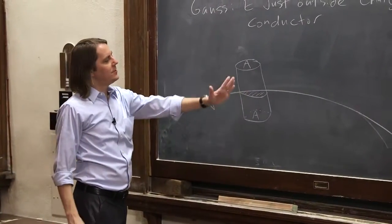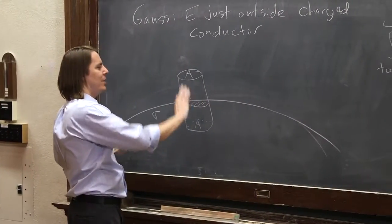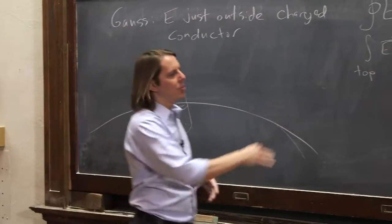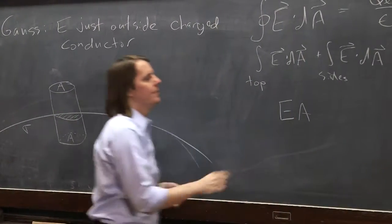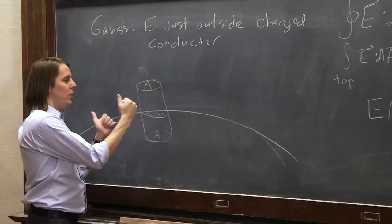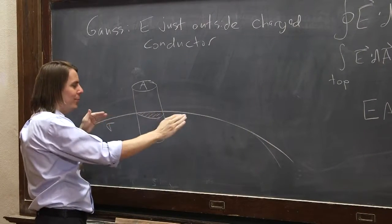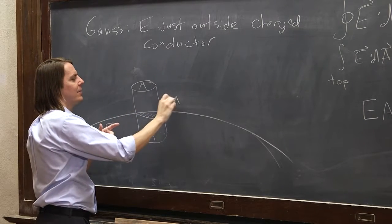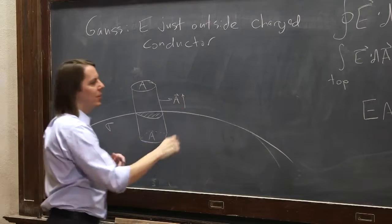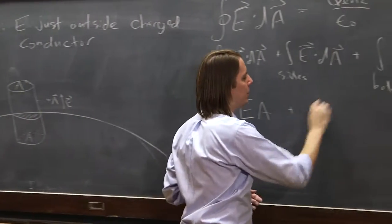Well, there's going to be some field sticking out the top. The A vector goes up. We know, since we're treating this essentially as an infinite plane, the E field sticks up. So as we've argued many times, this is EA. The sides, we know, because the electrons would move, right? If there was a field this way, the electrons would move. So we know that there's no flux through the sides. That is, if A vector is that way and E is that way, they're perpendicular to each other. So that's zero.